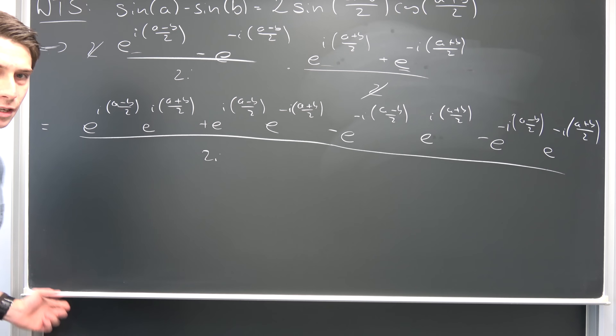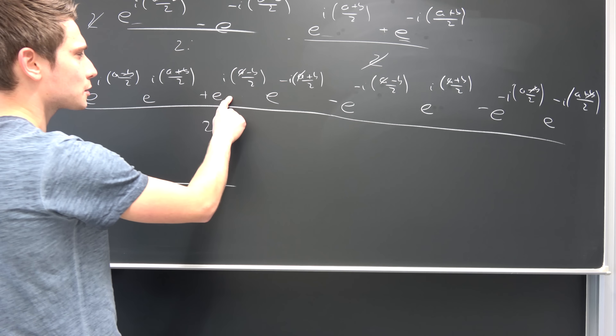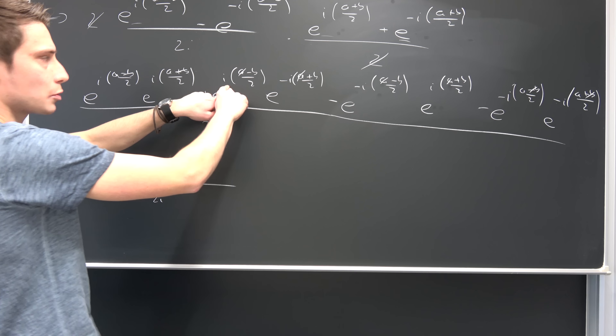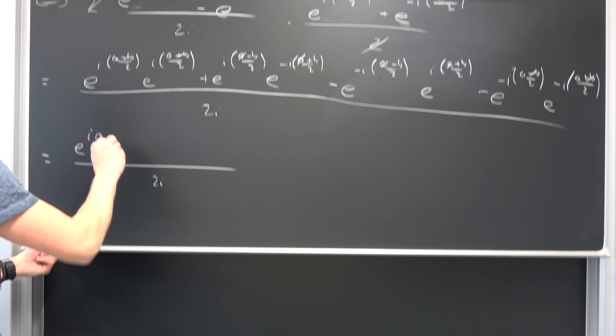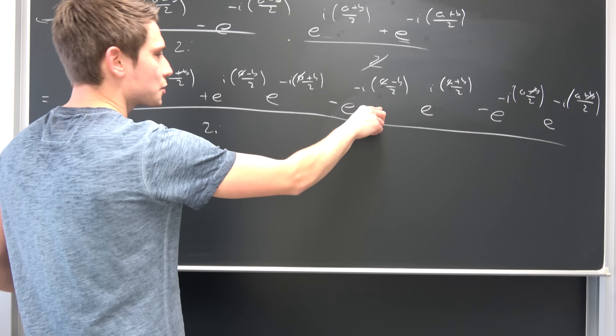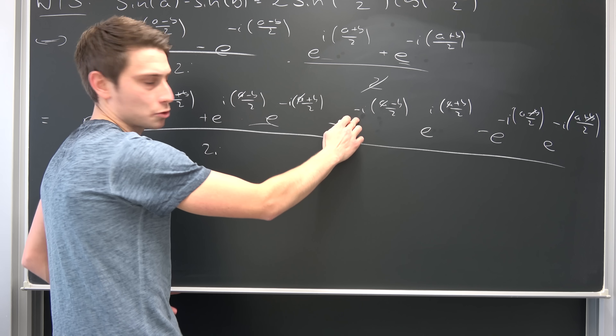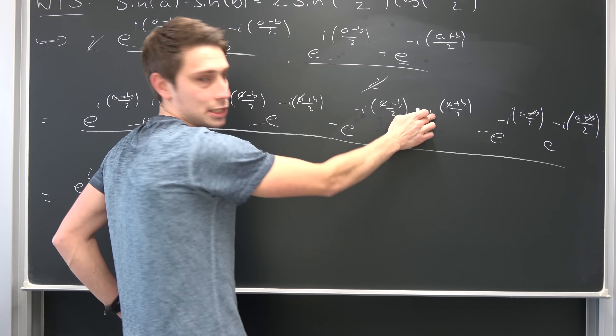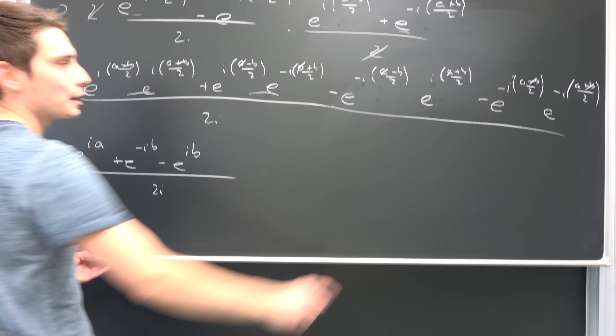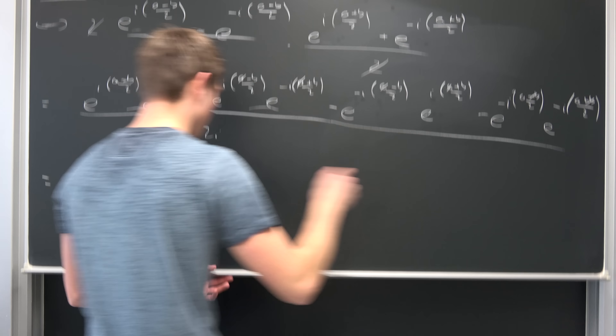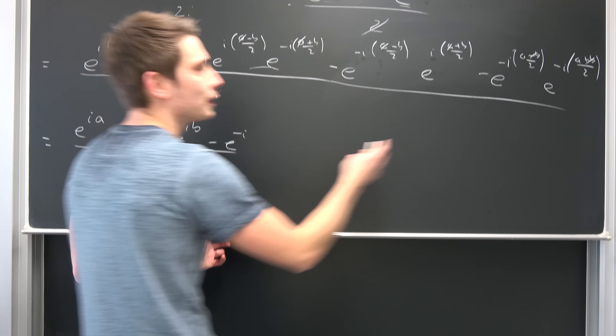So what are we going to get? We are going to get e to the i times a — since a over 2 plus a over 2 is just a — over 2 times i. And we also have e to the negative i times b, plus e to the negative i times b. Then negative and negative becomes positive, so positive i is a common factor, and b over 2 plus b over 2 is just b, giving us positive e to the i times b. And on the other part, we have negative e to the negative i times a as a common factor with a over 2 plus a over 2 equaling a.